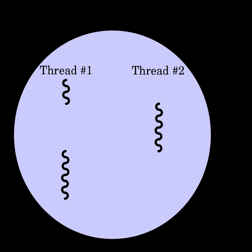In contrast, cooperative multithreading relies on threads to relinquish control of execution, thus ensuring that threads run to completion. This can create problems if a cooperatively multitasked thread blocks by waiting on a resource, or if it starves other threads by not yielding control of execution during intensive computation.